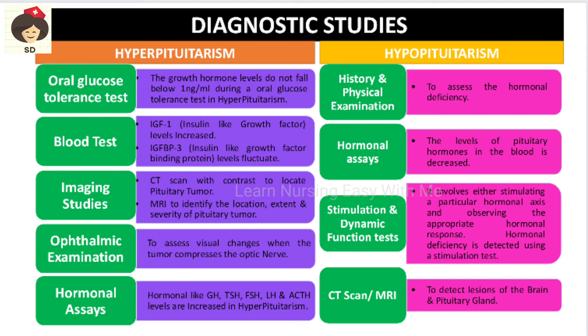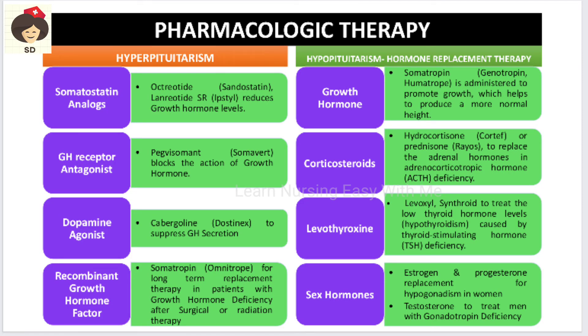Stimulation and dynamic function tests are done to stimulate the hormonal axis and observe for hormonal response; hormonal deficiency will be identified in stimulation tests. CT scan and MRI are also done to check for any lesions in the brain and pituitary gland.